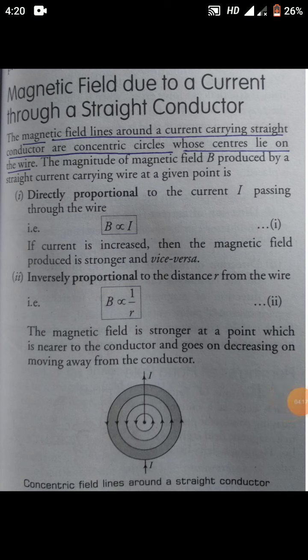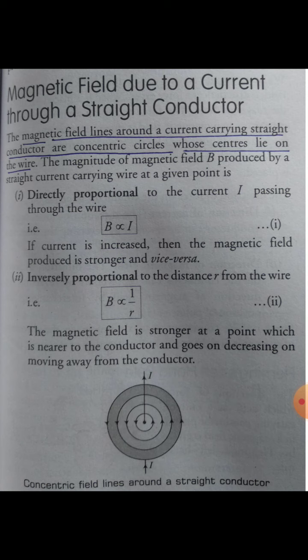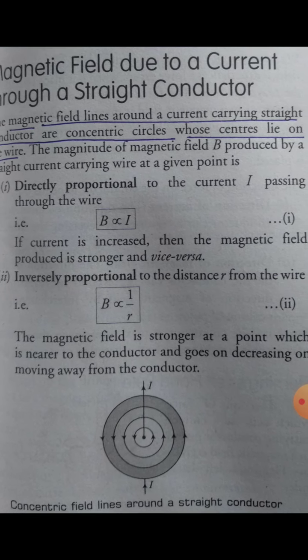Now we have to find the magnitude of the magnetic field produced by a straight current-carrying conductor. Magnetic field is represented by capital letter B. To find the magnitude of B, first: the magnetic field produced by a straight current-carrying conductor is directly proportional to the current flowing through the wire.